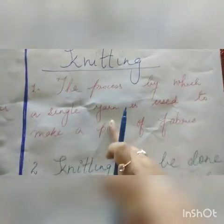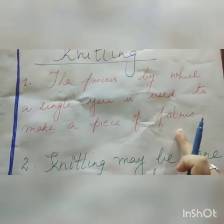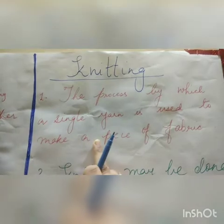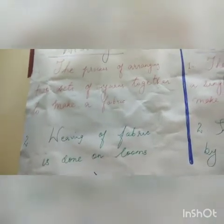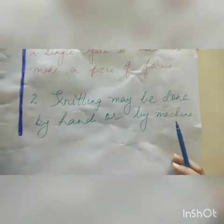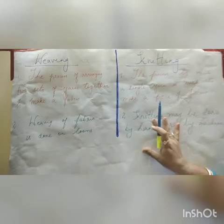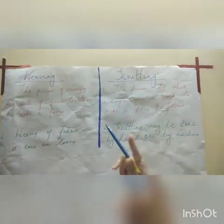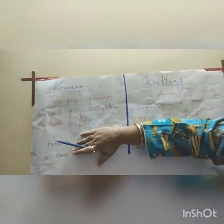For knitting, a single yarn is used to make a piece of fabric. If the question is for one mark, write only one point for each side. If it comes for two marks, write two points for each. The second point for weaving: fabric is made on looms. The second point for knitting: knitting may be done by hand or by machine. In the exam, match the number of points to the marks allocated.